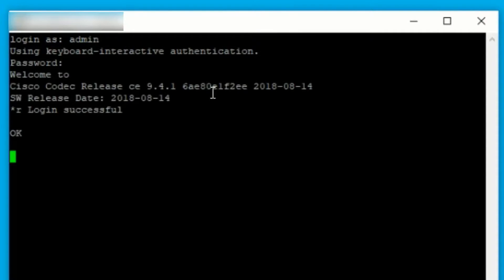Open the command line to the endpoint with an SSH client such as PuTTY. Run the command XCommand Cameras SpeakerTrack Diagnostics Start.